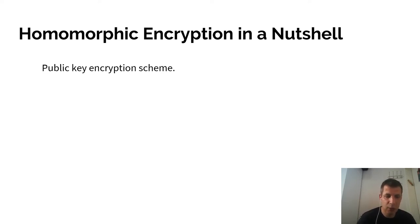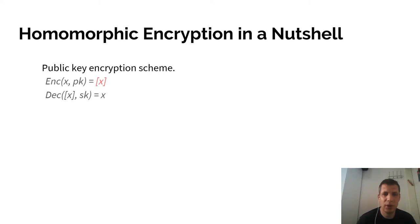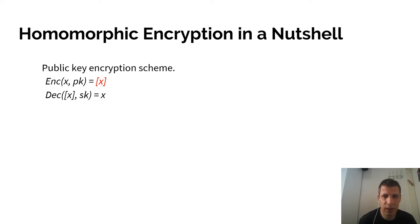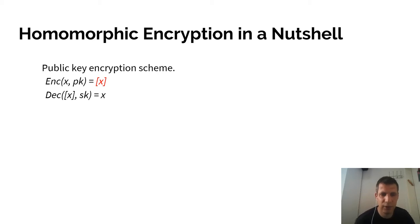Homomorphic encryption is a public key encryption scheme, which means we have a public key with which we encrypt. We denote the encryption of X by X in brackets, and if we decrypt the ciphertext of X with the secret key, we get X back.